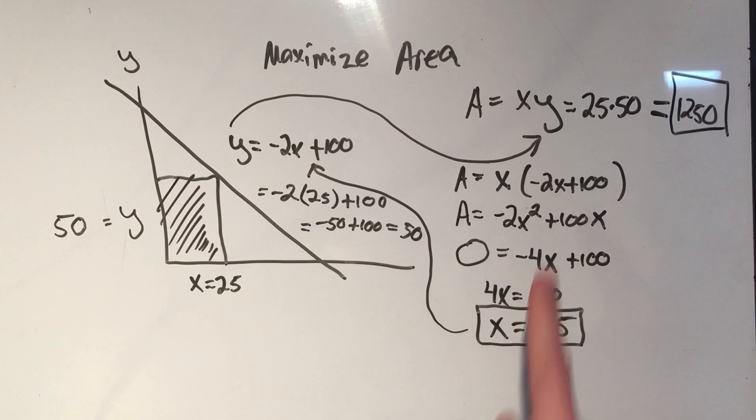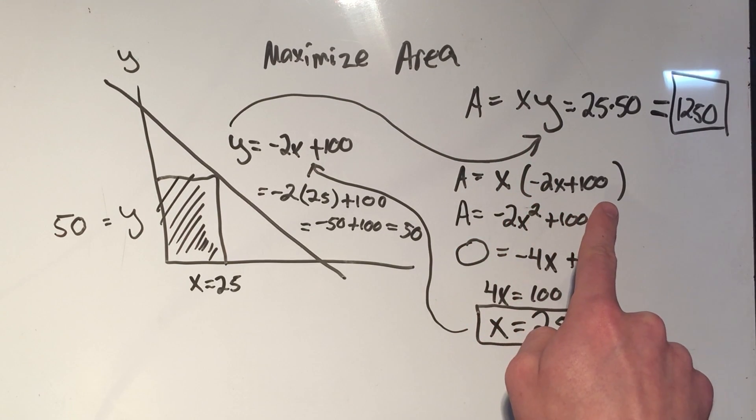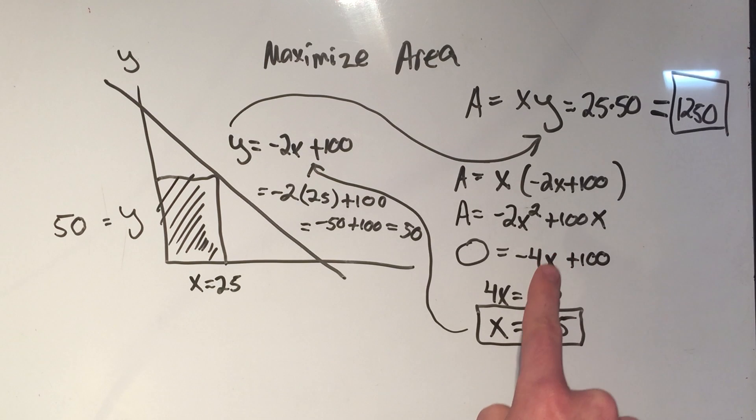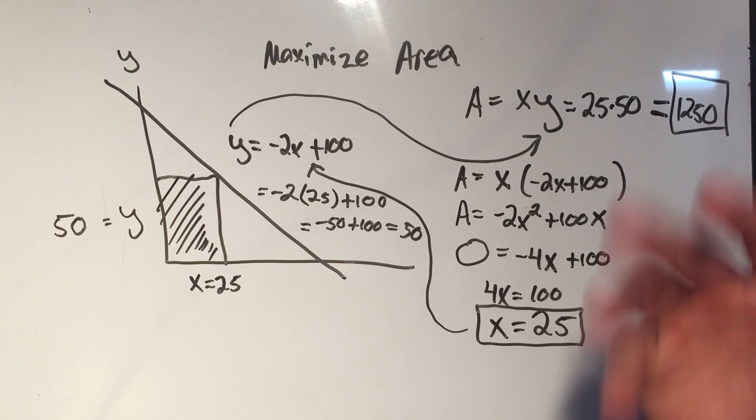So what we do, I take the derivative of this. But I plug in my constraint function, simplify, take the derivative, set it equal to zero, solve, that gives me one dimension, I plug that into my constraint to get the other number. And if they actually ask for the maximum area, compute it.